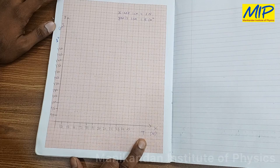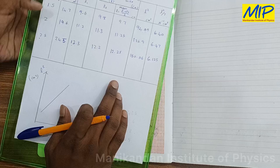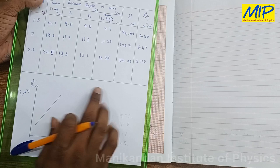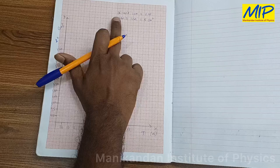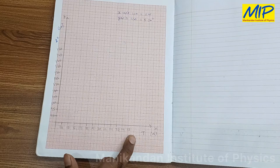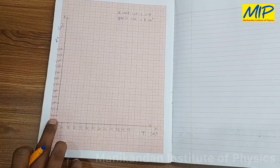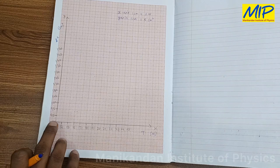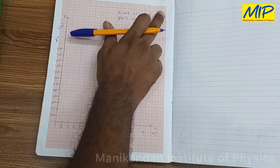I am going to plot a graph between L² and T. Along the x-axis I take tension in Newtons, and along the y-axis L² in centimeter squared. The x-axis ranges from 14 to 25, with 1 cm = 1 Newton. The y-axis ranges from 90 to 150, with 1 cm = 5 cm².